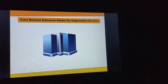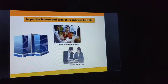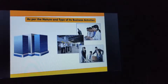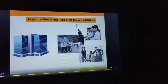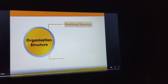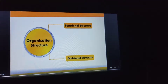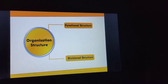Every business enterprise adopts the organization structure as per the nature and type of its business activities. They are of two types: the first one is functional structure and the second is divisional structure. Let us understand functional structure first.